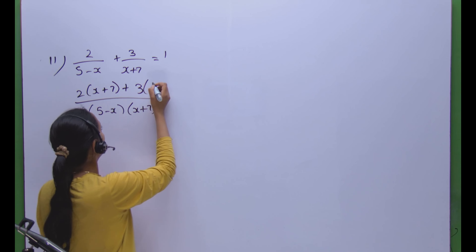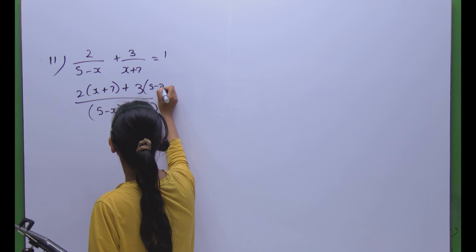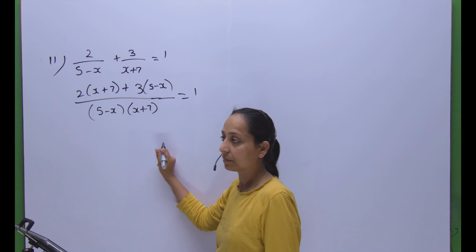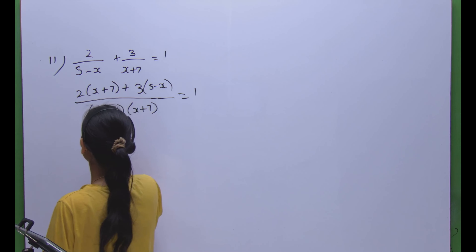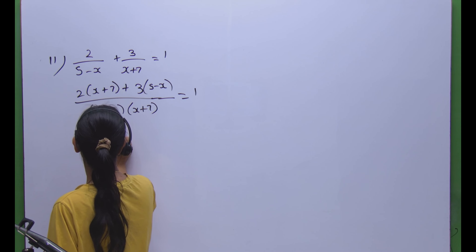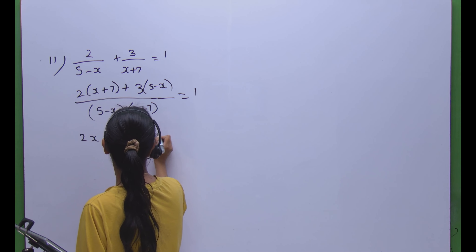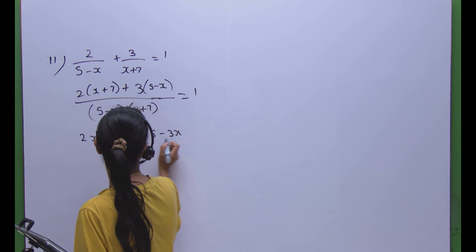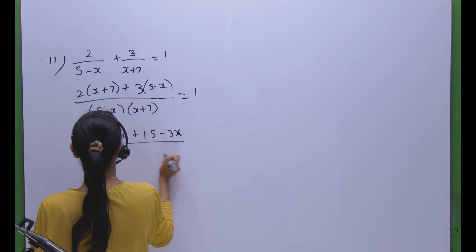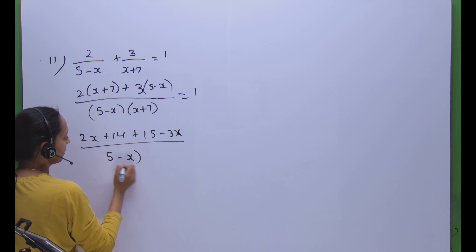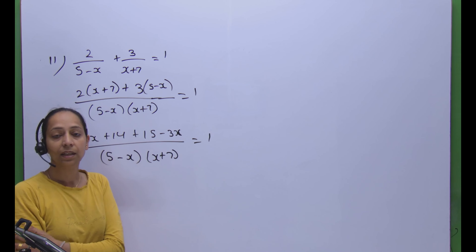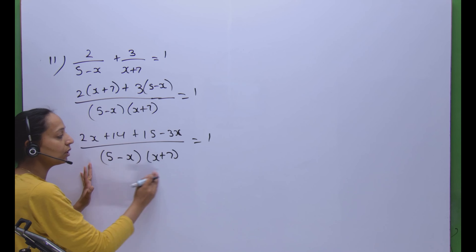Now multiply 3 with (5 minus x), equal to 1. Opening the bracket it becomes 2x plus 14, plus 15 minus 3x, over (5 minus x)(x plus 7) is equal to 1.